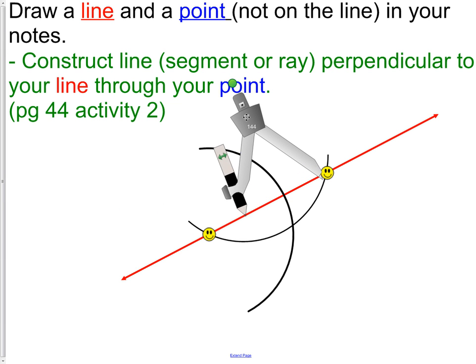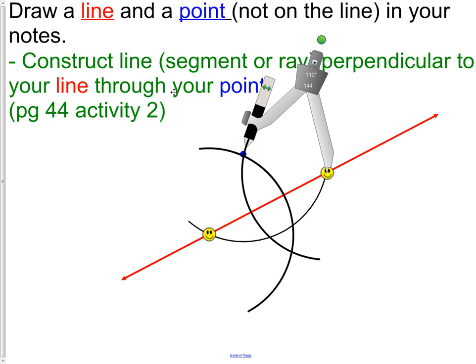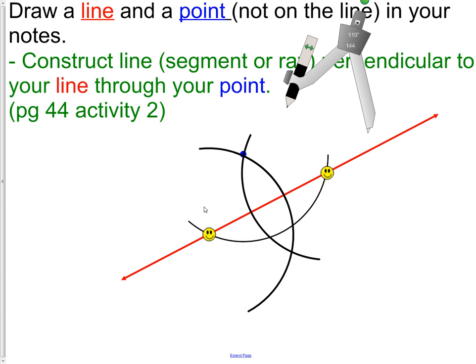Move your compass point down to the other arc, and again, draw our arcs. You'll notice if you've done it correctly, you should have now the ability to draw a line or a segment that crosses your two arcs and will be perpendicular to our red original line. So we'll have a perpendicular right there. If it doesn't look perpendicular, then you may have done something incorrectly.